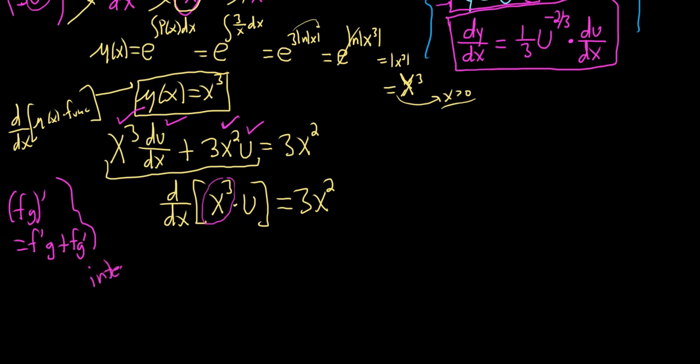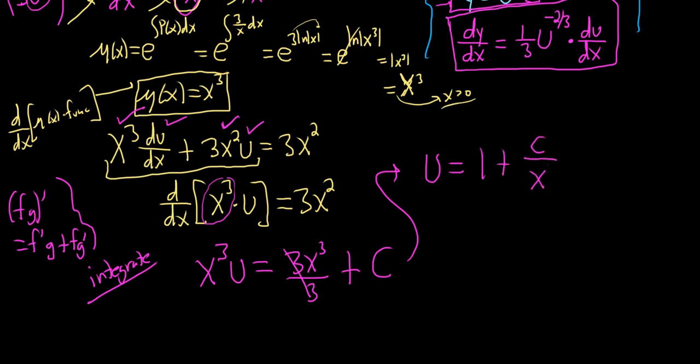To get rid of the d/dx, we just integrate. And then on the left-hand side, the d/dx just goes away. This is really easy to integrate too. We use the power rule. So this is 3x cubed over 3, and then plus our constant c. Let's go ahead and divide by x cubed because it makes it look pretty. So this is u equals 1 plus c over x cubed. It looks so simple, it looks wrong.